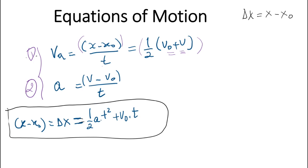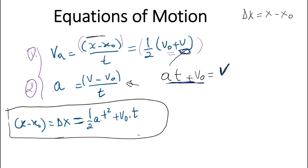To find this third equation from these two definitions, notice that the displacement equation does not contain the velocity v. So I go to the acceleration equation and see what velocity v means — v is the velocity at any time t, which equals acceleration times t plus v₀. I then replace this v in the average velocity equation and solve for Δx.